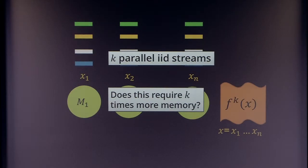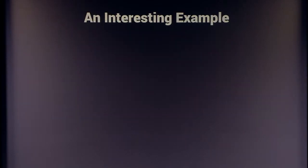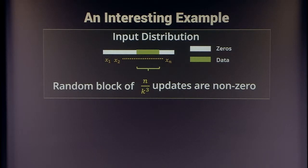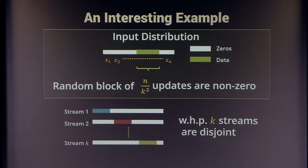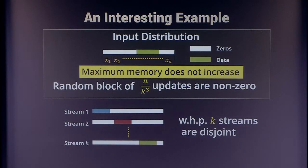It turns out it's a little subtle to formalize this question. Consider a distribution where the stream has length n, and you randomly choose a block of n/k³ inputs where there is actual data, while the rest are zeros. If you sample k streams independently, with high probability when there is data in one stream there will be no data in any other. So you can run your single-stream algorithm on each independently, and when processing one stream no other stream requires processing. The maximum memory used by this straightforward approach will not increase at all.